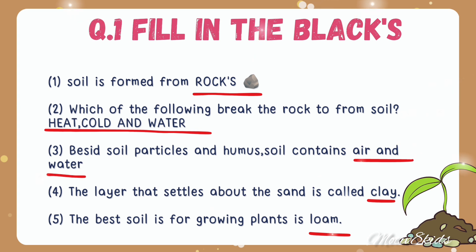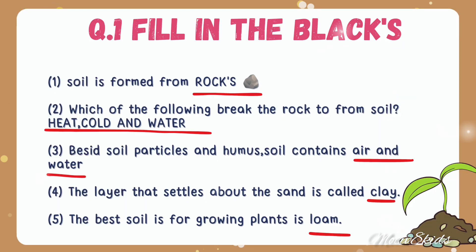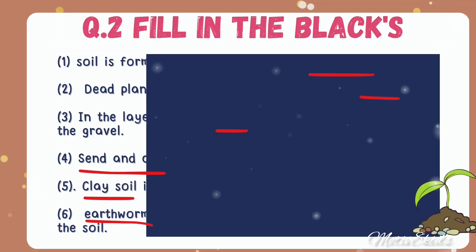Soil is formed from rocks. Which of the following break the rock to form soil? Heat, cold and water. Beside soil particles and humus, soil contains air and water. The layer that settles above the sand is called clay. The best soil for growing plants is loam. The underlined parts are the answers to these questions.